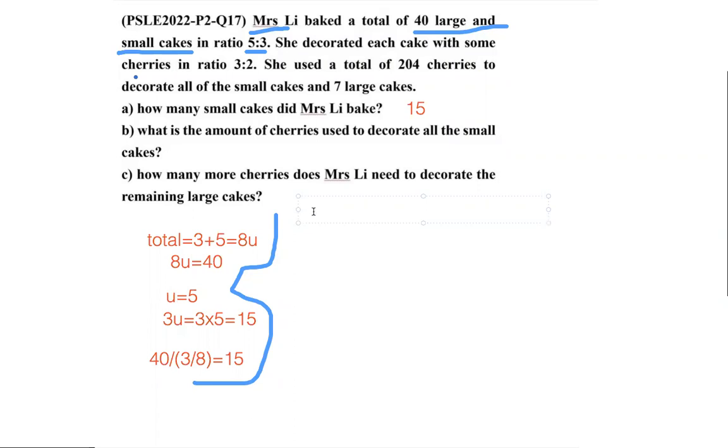We know there are a total of 204 cherries. Let's say the number of cherries on the large cake is 3 units and on the small cakes are 2 units. But we already used units, so I'm going to use parts, which I'll write as P.